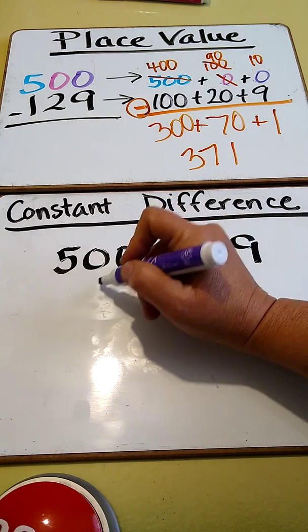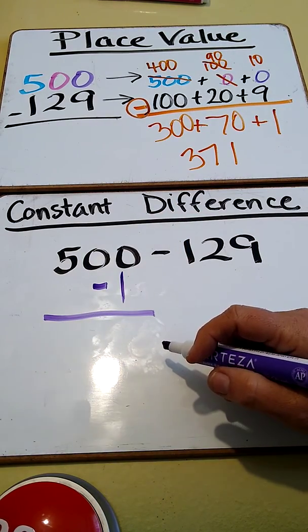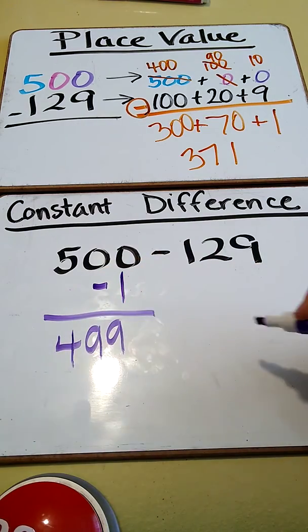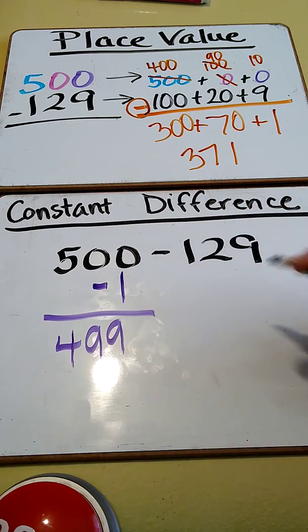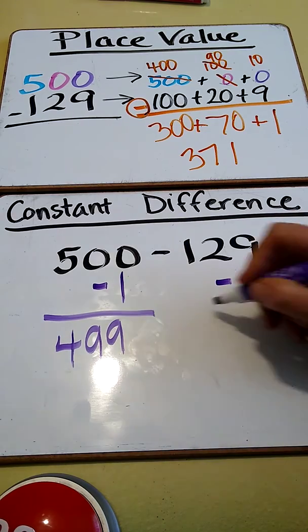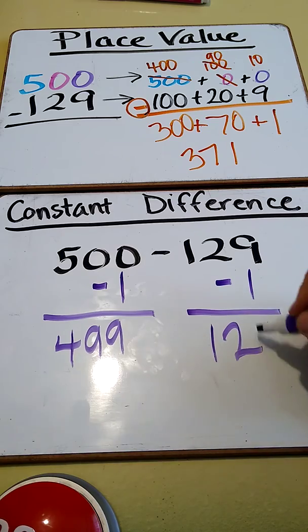Okay? So to do that, I'm just taking one away from 500. If I take one away from 500, that gives me 499. Now, since this is a constant difference, the difference has to stay constant, the same between the two of them, I am also going to take one away from 129. 129 minus one is 128.